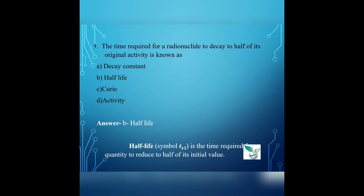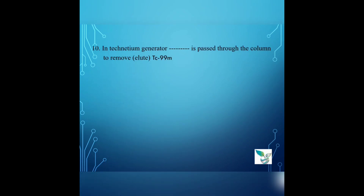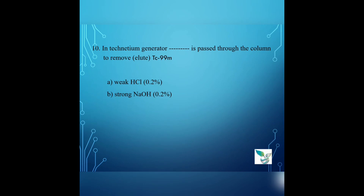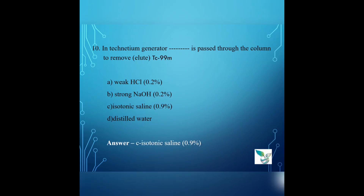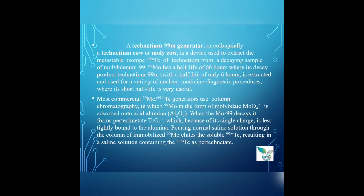Question number 10: In the technetium generator, dash is passed through the column to remove — that is, elute — technetium 99M. Option A: weak HCl (hydrochloric acid, 0.2%), Option B: strong sodium hydroxide (0.2%), Option C: isotonic saline (0.9%), Option D: distilled water. The answer is Option C, isotonic saline (0.9%).